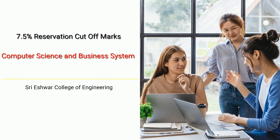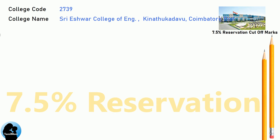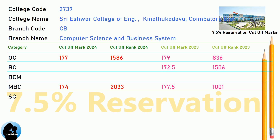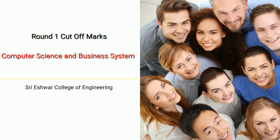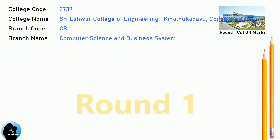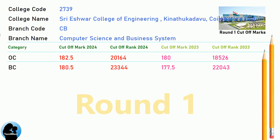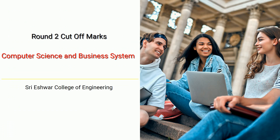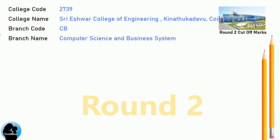DNA Cut-Off and TNA 7.5 Reservation Cut-Off for Shri Aishwara College of Engineering in Computer Science and Business System. DNA 7.5 Reservation Cut-Off and DNA Round 1 Cut-Off for Shri Aishwara College of Engineering in Computer Science and Business System. DNA Round 2 Cut-Off for Shri Aishwara College of Engineering in Computer Science and Business System.